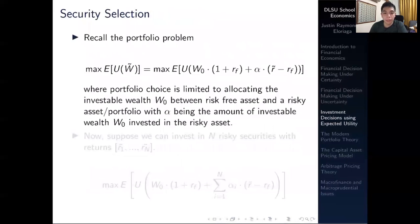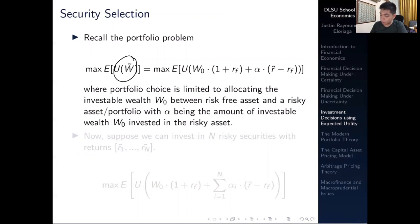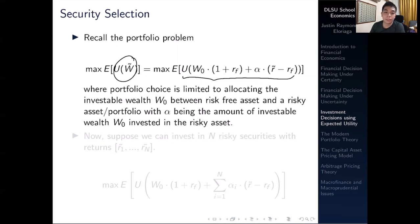If you recall the portfolio problem, the goal is to maximize the expected utility of wealth. We have here 1 plus RF, which is your risk-free rate, multiplied by a certain wealth W naught — this will be essentially your risk-free return. Then you have alpha, which is some amount of investable wealth you allocate to the risky asset, multiplied by its rate of return: the difference between the risky expected rate of return less the risk-free rate.